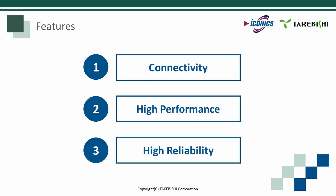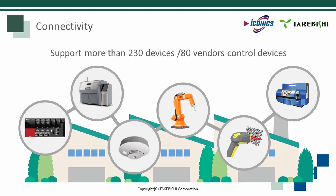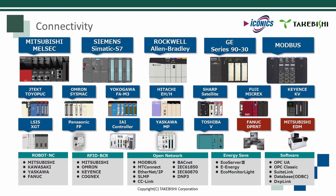The DXP Server has three features: connectivity, high performance and high reliability. The first feature is connectivity. The DXP Server can communicate with more than 230 devices from 80 vendors, providing flexible connection possibilities. It supports PLCs from Mitsubishi, Siemens and Rockwell, as well as robots, machine tools, and open networks such as Modbus, BACnet and DNP3. Data can be acquired from any device on the production floor.